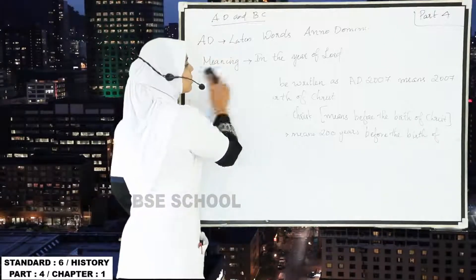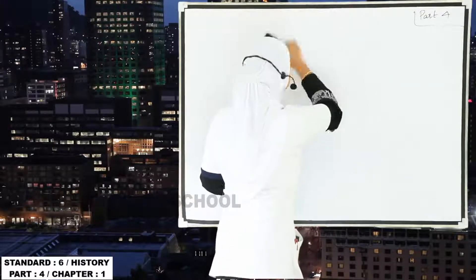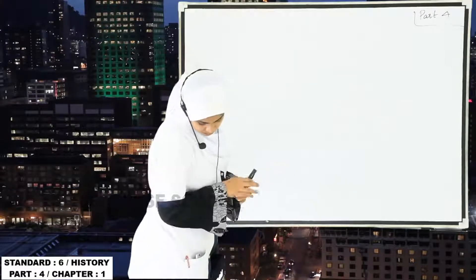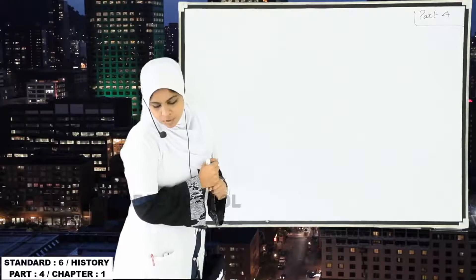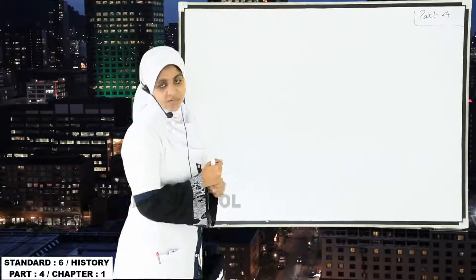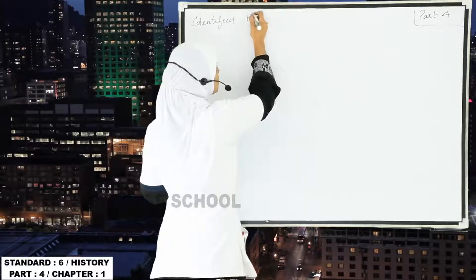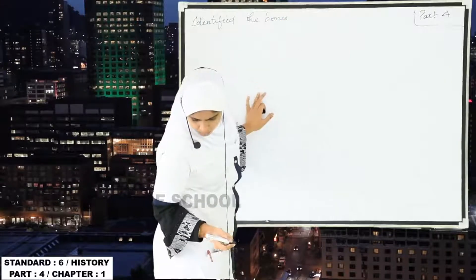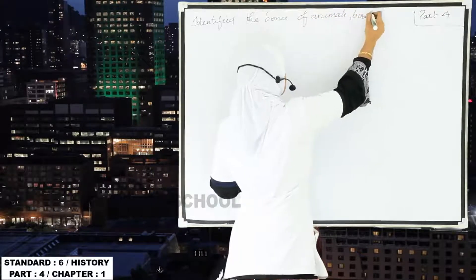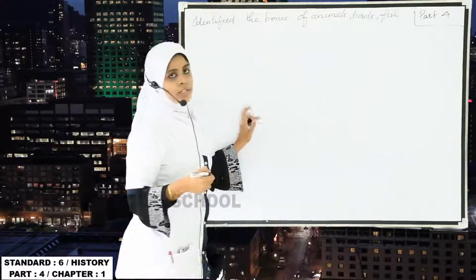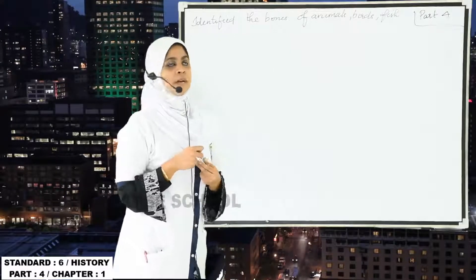The next topic is: how do archaeologists know about the eating style of people who lived years before? They studied the bones of animals, birds, and fish to identify the eating habits of people. The first method was identifying the bones of animals, birds, and fishes to understand the eating habits of people who lived in the past.